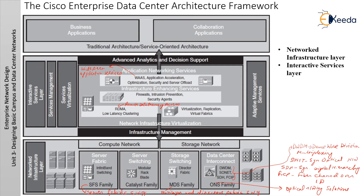Now we come to the Cisco Enterprise Data Center Architecture Framework. This framework uses consolidation and virtualization of data center resources, requiring a highly scalable, resilient and secure data center network foundation. In Unit 1 we discussed applying a methodology to network design — the Cisco Service Oriented Network Architecture (SONA) framework defines how enterprises can evolve towards intelligence in the network to optimize applications, business processes and resources. The Cisco Enterprise Data Center Architecture, based on SONA, provides organizations a framework to address immediate data center demands for consolidation and business continuance while enabling emerging services such as SOA, virtualization and on-demand computing.